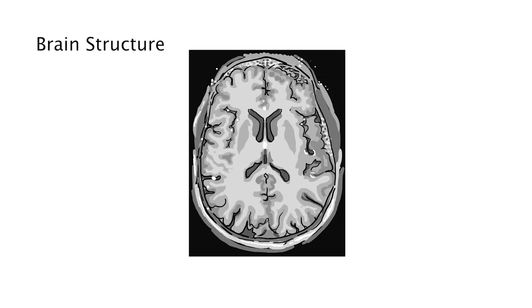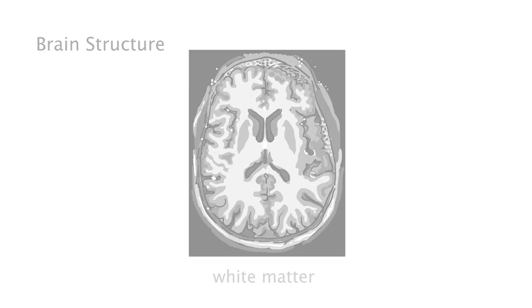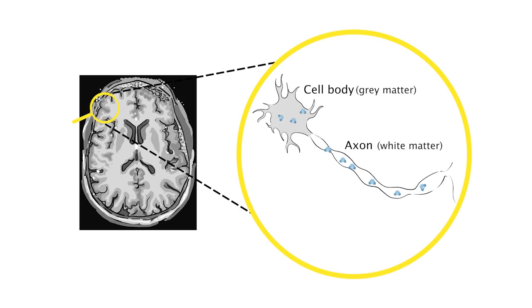One way that MRI can show brain structure is by creating images that clearly show different tissue types. For example, in this MRI image, we can see the difference between grey and white matter in the brain. Grey matter is the body of nerve cells, whereas white matter is made up of long fibres called axons that connect these cells. Water molecules behave differently in these two environments. This means we can create images that clearly show the location of grey and white matter in the brain.